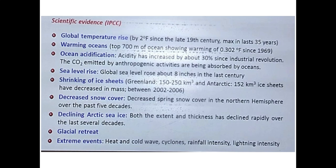Another evidence is the shrinking of ice sheets. In Greenland, approximately 150 to 250 cubic kilometers, and in Antarctica, 152 cubic kilometers of ice sheets decreased in mass between 2002 and 2006. Within just four years, this much ice melted across these two large landmasses — very alarming data. There is also a decrease in spring snow cover in the Northern Hemisphere over the past five decades.